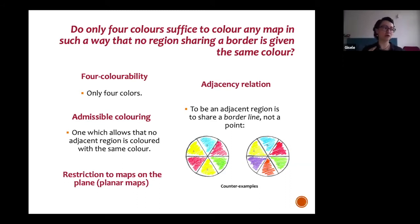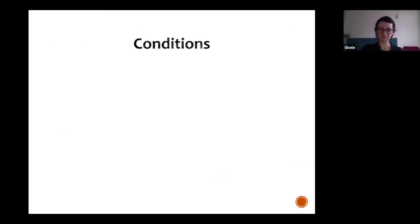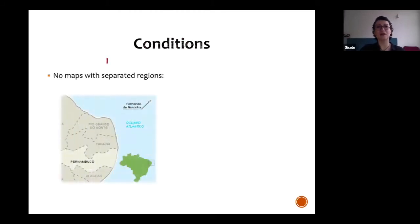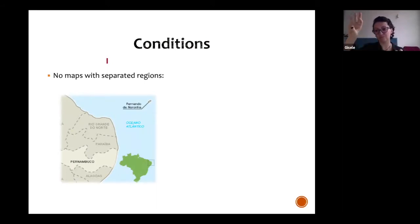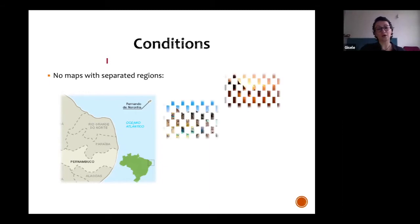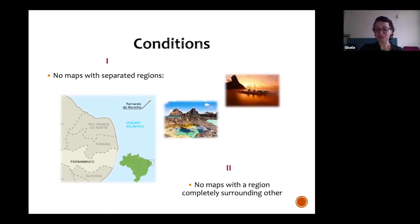Another important thing regarding the formulation of the problem is that we are only talking about maps in the plane — planar maps, not maps on the sphere. We are not talking about real maps; we are talking about planar normal maps. Normal maps satisfy some conditions. In a normal map, you don't have one region separated into two regions — like Fernando de Noronha, which is part of the state of Pernambuco in Brazil. You cannot have a map in which one region is completely surrounded by one other region.